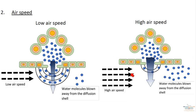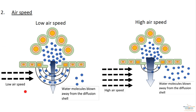The next factor is airspeed or wind speed. The diagram on the left represents low airspeed — water vapor accumulates on the underside of the leaf, and the wind is so slow it doesn't blow away many water vapor molecules. This gives a shallow diffusion gradient between the inside and outside of the leaf, resulting in a low rate of transpiration.